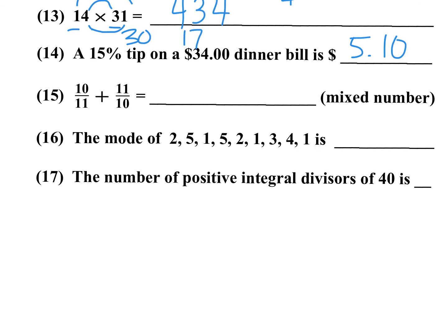Number 15 has a special shortcut for adding a fraction plus its reciprocal: 10/11 plus 11/10. The answer is always 2 and a fraction. Write the 2; the difference between 11 and 10 is 1, so 1 squared is 1, and the denominator is 11 times 10 which is 110. Answer: 2 and 1/110.